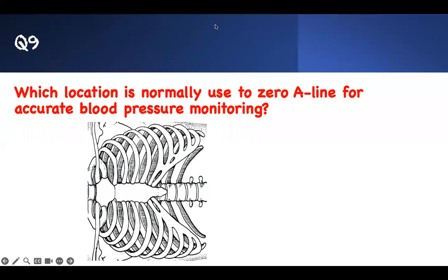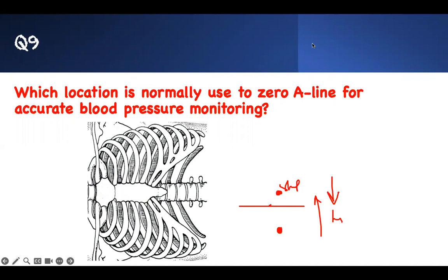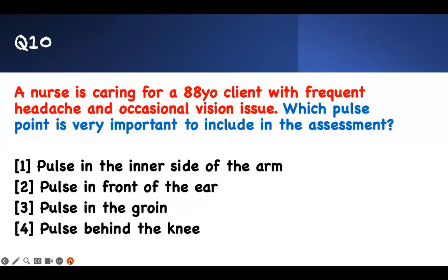This is critical: if the stopcock is placed above the phlebostatic point, the reading will be low; if placed below it, the reading will be high. You can also define it as halfway along the AP diameter of the chest. Always ensure the transducer is at heart level for accurate readings.